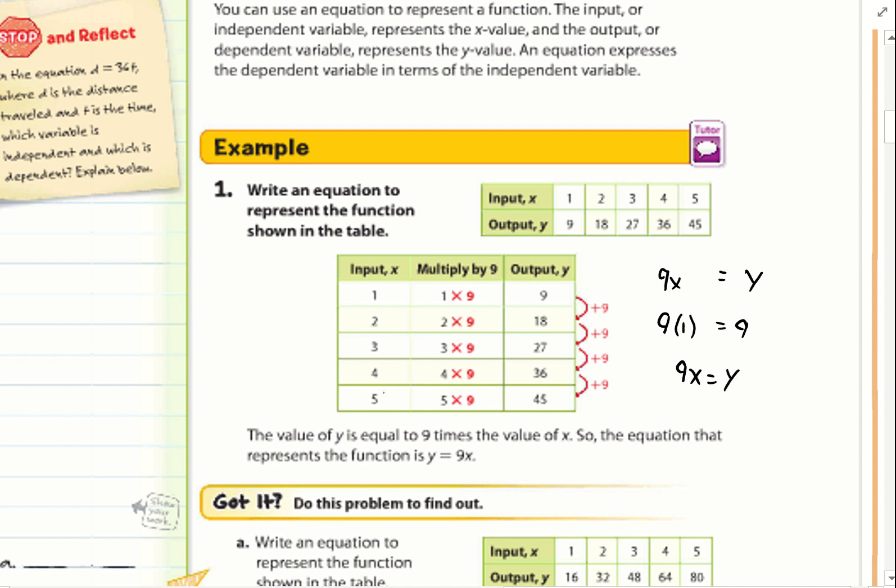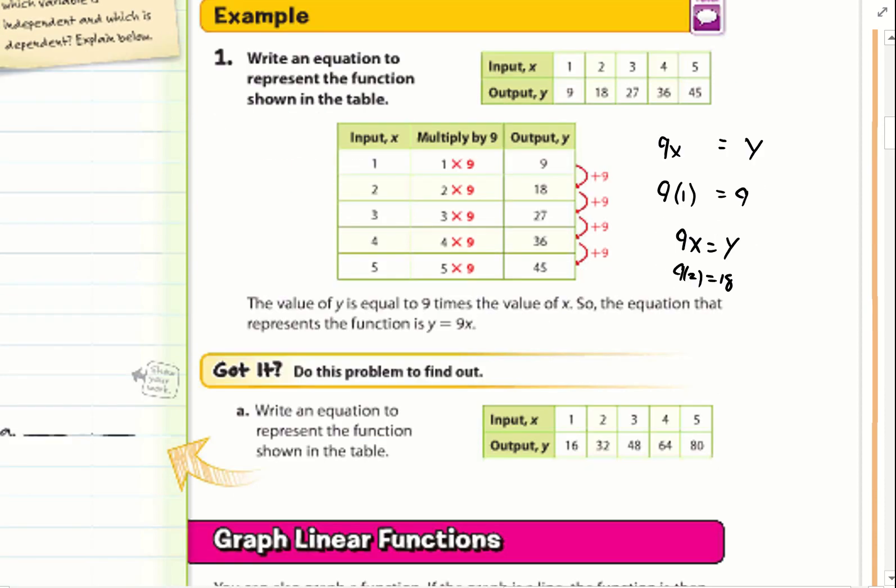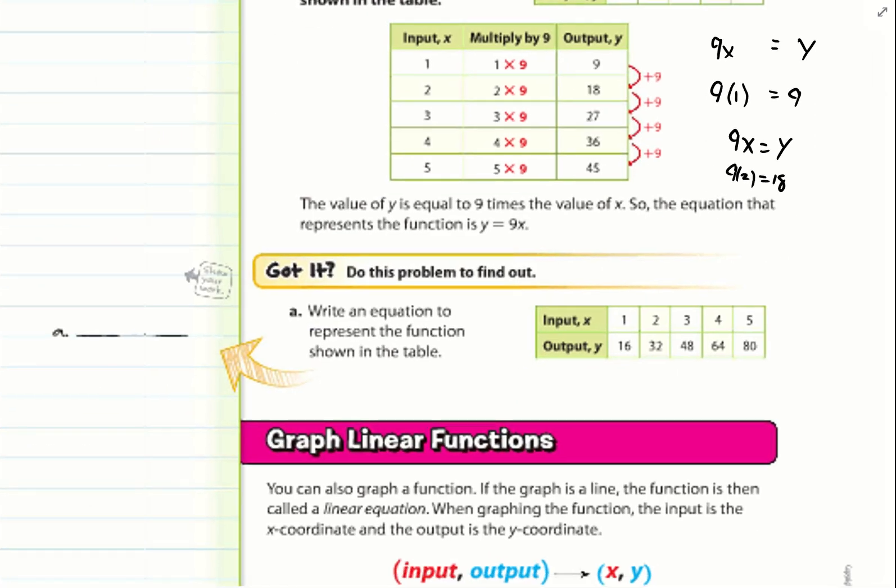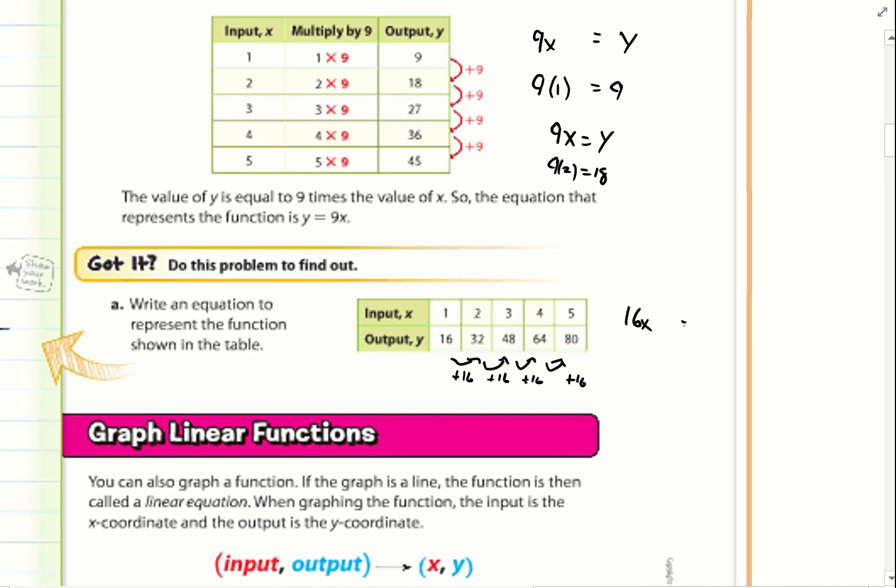Because every time I input my x value, my output matches in my table. For example, if x equals two, nine times two equals 18, so y equals 18. Now go ahead and write an equation for a. I notice this is an increase by 16. That means my equation is going to have 16x and I'm going to set it equal to y. I'm putting this space here in case I need to add more to my equation. When x equals one, it says y equals 16. 16 times one does indeed equal 16. So my equation 16x equals y, my function is true.